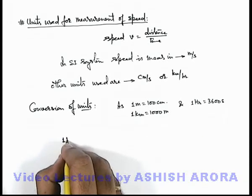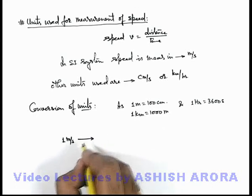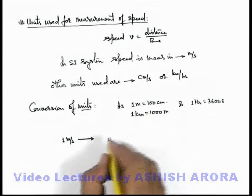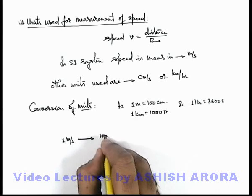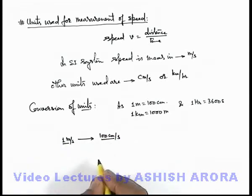If you wish to convert 1 meter per second to centimeter per second, then 1 meter you can write as hundred centimeter, so this will be hundred centimeter per second. We have just replaced 1 meter to hundred centimeter.